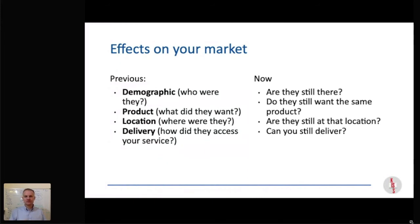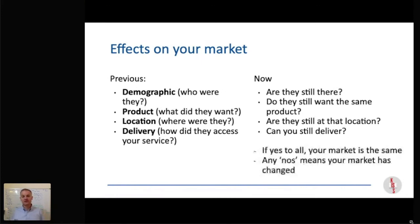Donors Choice has had to adjust their model because their clients — teachers — are no longer in the school, and the kids they want to give resources to are no longer at school either. So their delivery and locations are completely different. The demographics are the same, the product is the same, but the physical location and delivery method are very different. The point is: you need to think about whether your market has shifted, remained the same, or evaporated. High-end fine dining restaurants — that market is effectively gone in a lot of places. But anything online, the market is the same or may have grown.